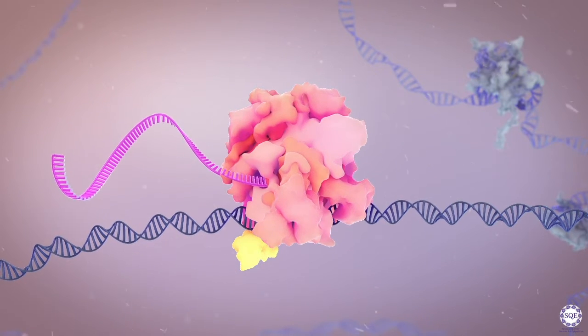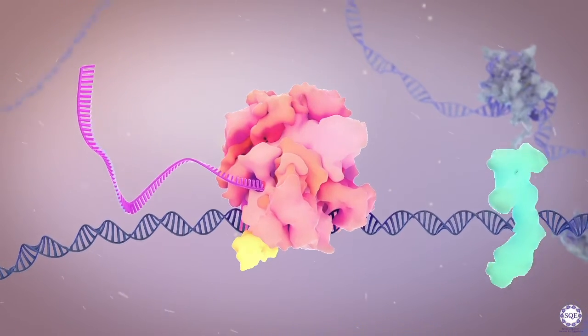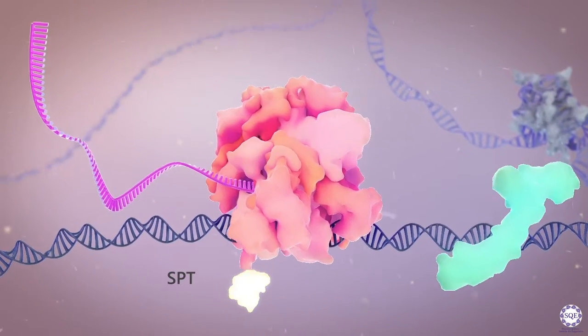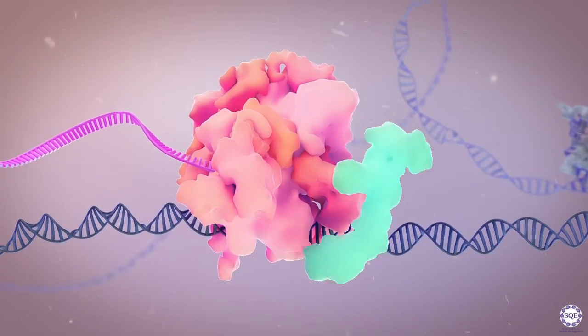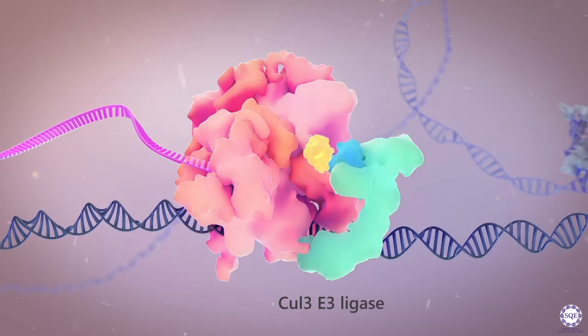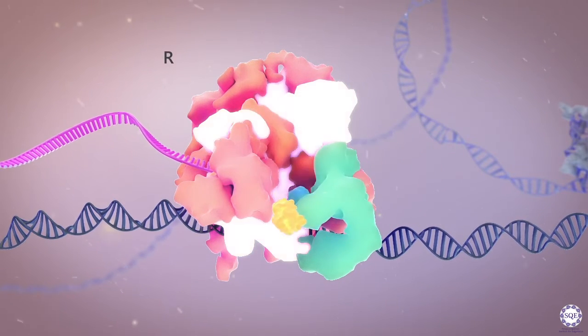Through acute depletion methodology, SPT5 is depleted from the DSIF complex, resulting in the loss of SPT4. This, in turn, recruits CUL3E3 ligase to the RNA polymerase 2 subunit, RPB1.